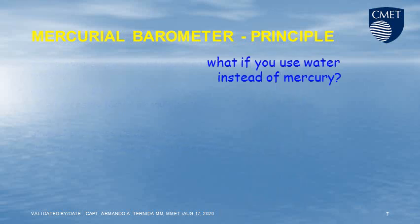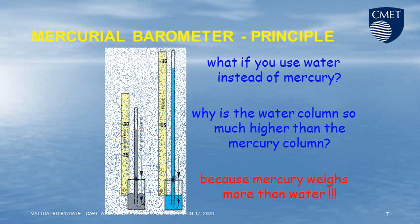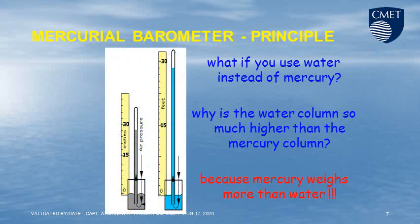What if you use water instead of mercury? Why is the water column so much higher than the mercury column? Because mercury weighs more than water.